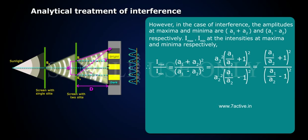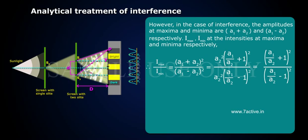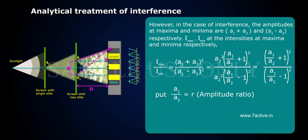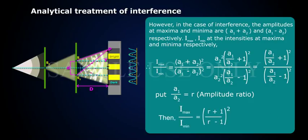Therefore, I_max by I_min equals (A1 + A2) squared by (A1 - A2) squared, which equals (A1/A2 + 1) squared by (A1/A2 - 1) squared. Putting A1 by A2 equals R (the amplitude ratio), I_max by I_min equals (R + 1) squared by (R - 1) squared.